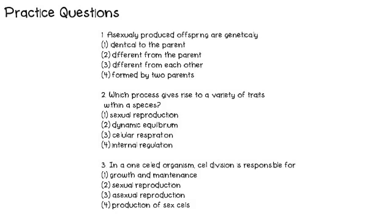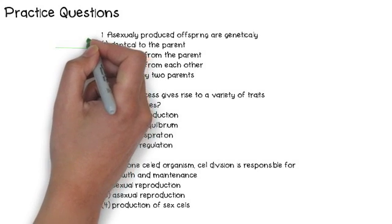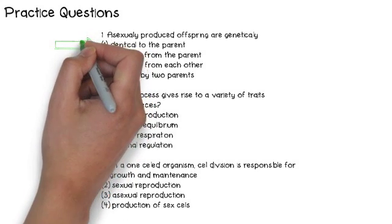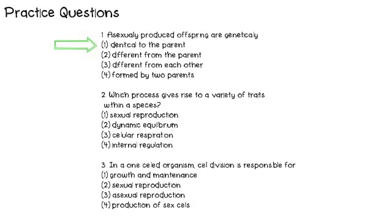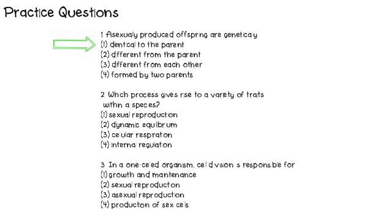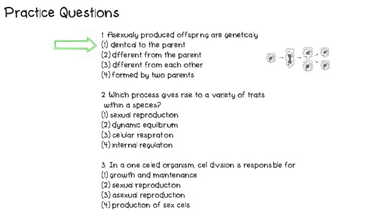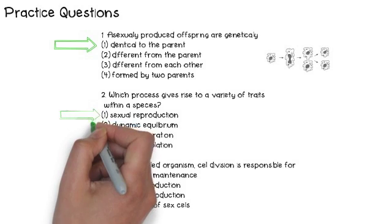Pause this video and try to answer these questions. Number 1: Asexually produced offspring are genetically identical to the parent — they are exact copies. It can't be number 2 because there's no mixing of DNA and no genetic variation. It can't be number 3 because they aren't different from each other. And number 4 is wrong because there is only one parent.